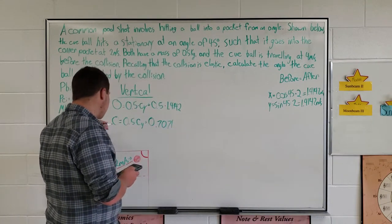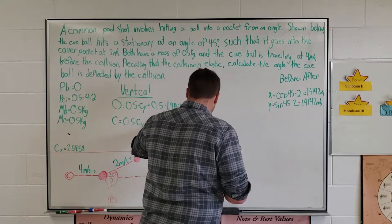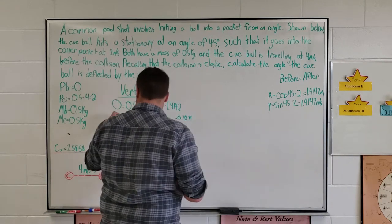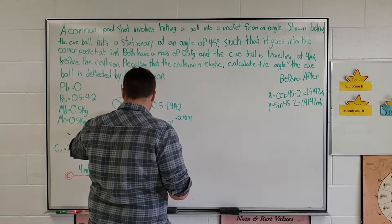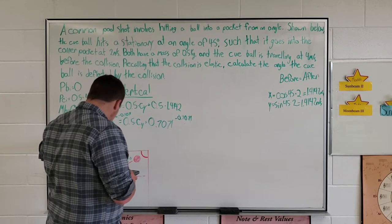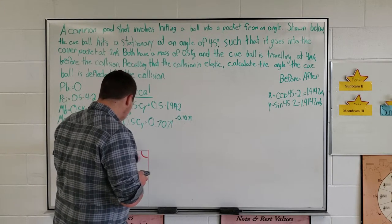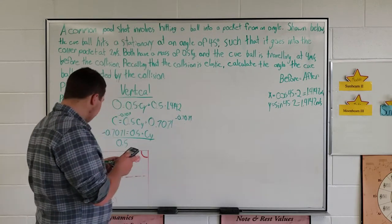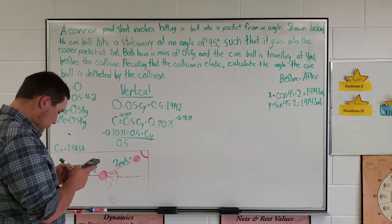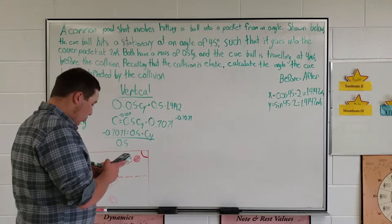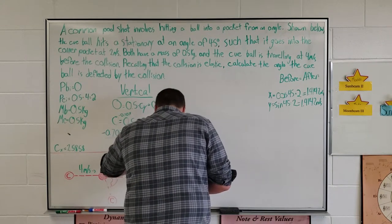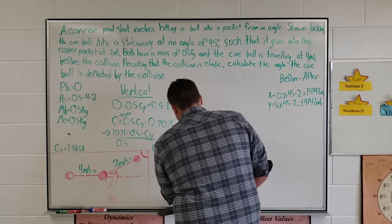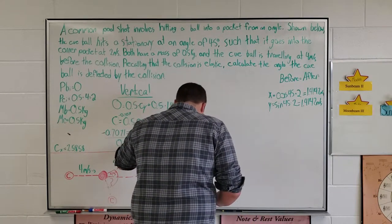We're going to subtract that from both sides. Then we'll have negative 0.7071 equals 0.5 times Cy. We'll divide both sides by 0.5 again, and that would give us negative 1.4142. But this can't be negative, so it just becomes 1.4142.